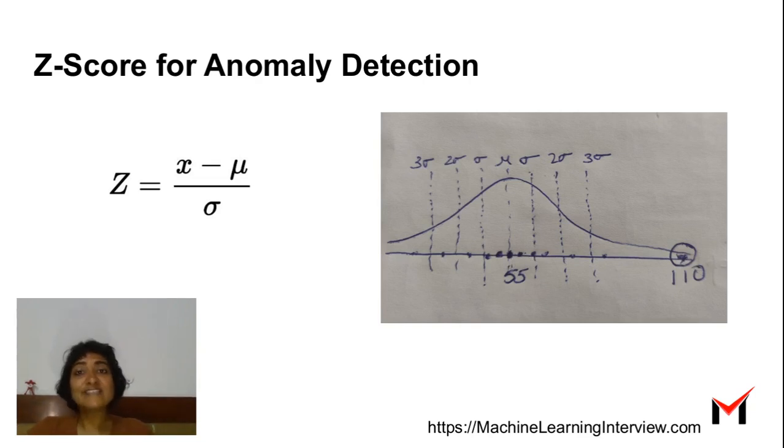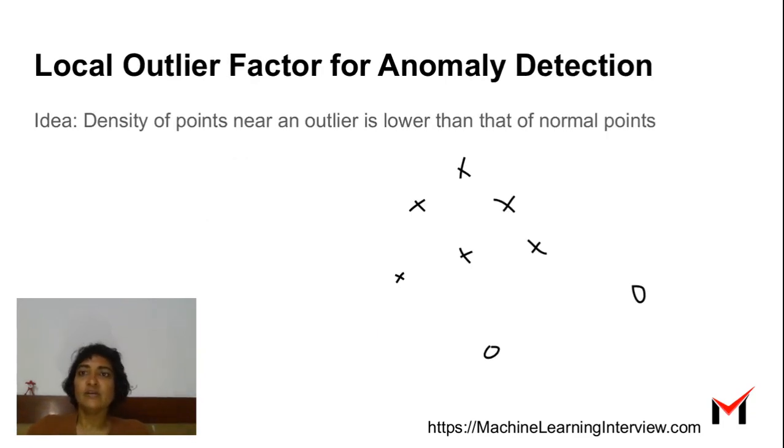Since distances are often relative, it's often normalized by the standard deviation to see how many standard deviations away a particular data point is. That's the basic idea behind z-score. Another popular technique is Local Outlier Factor for anomaly detection.